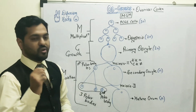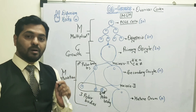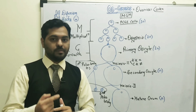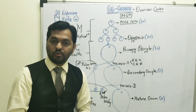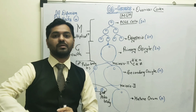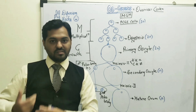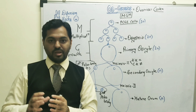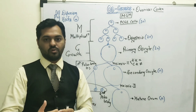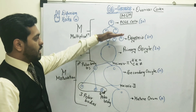Another key difference for your entrance exam: spermatogenesis in males begins at puberty, whereas oogenesis in females starts even before the birth of a female child. During pregnancy, when the female embryo is developing, oogenesis begins — though it later pauses and only proceeds further after puberty.